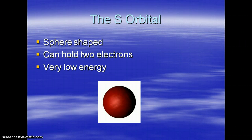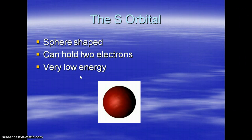The lowest energy orbital is called the S orbital. It's shaped like a sphere. It can hold two electrons — a very low energy orbital.